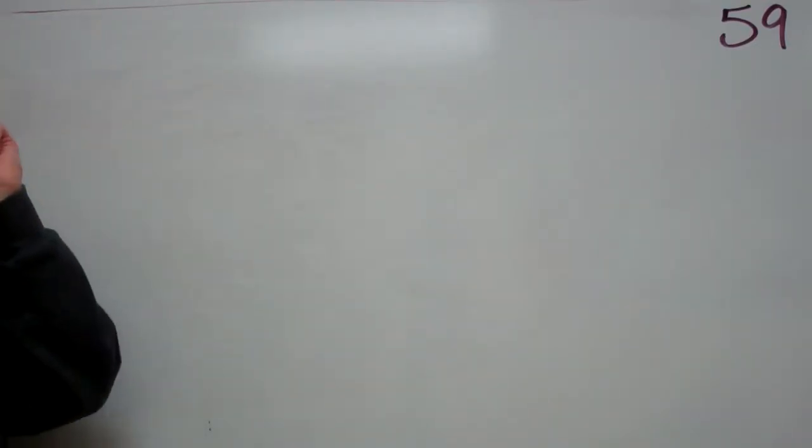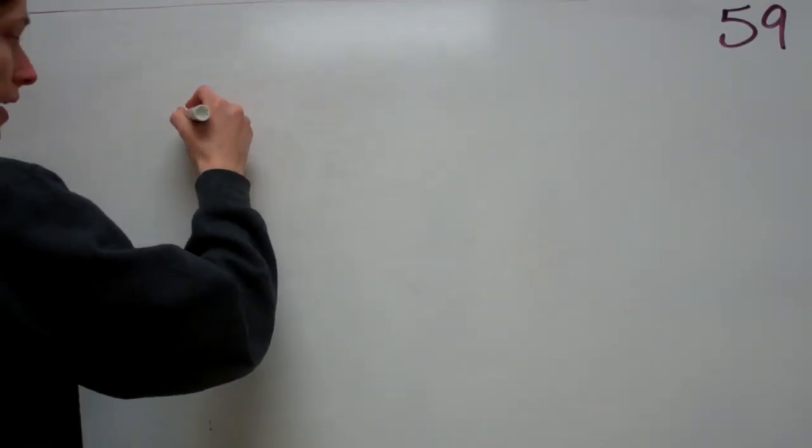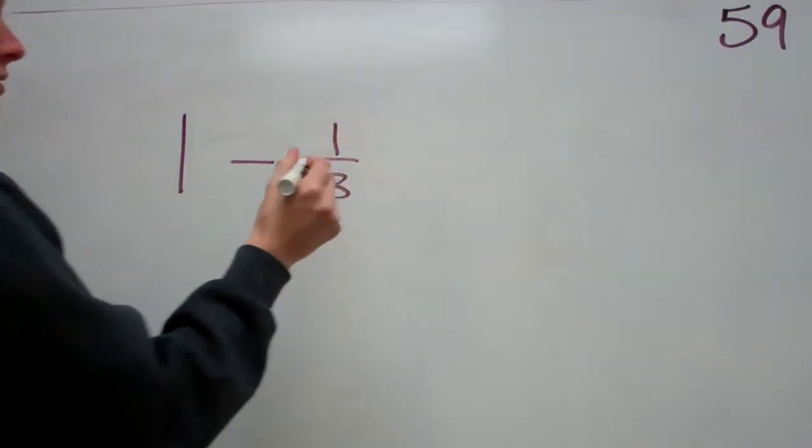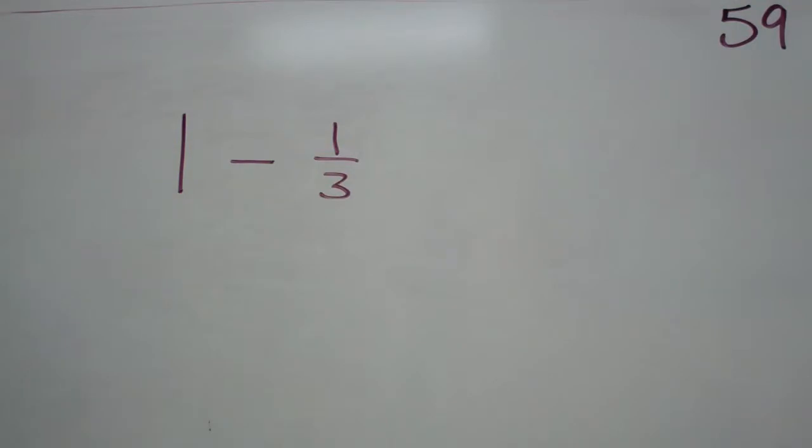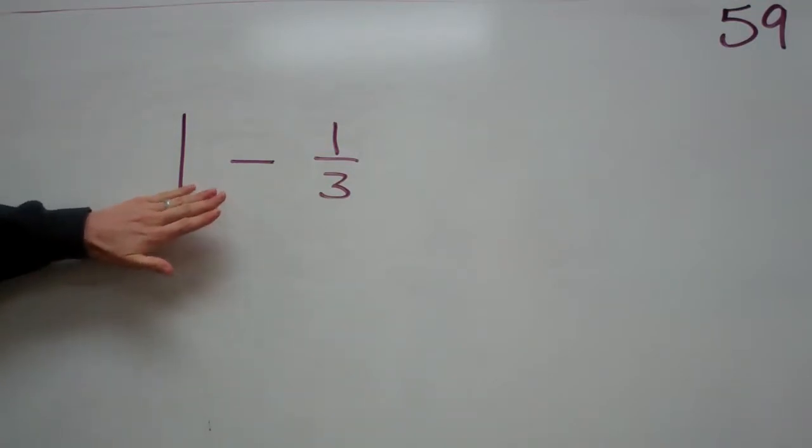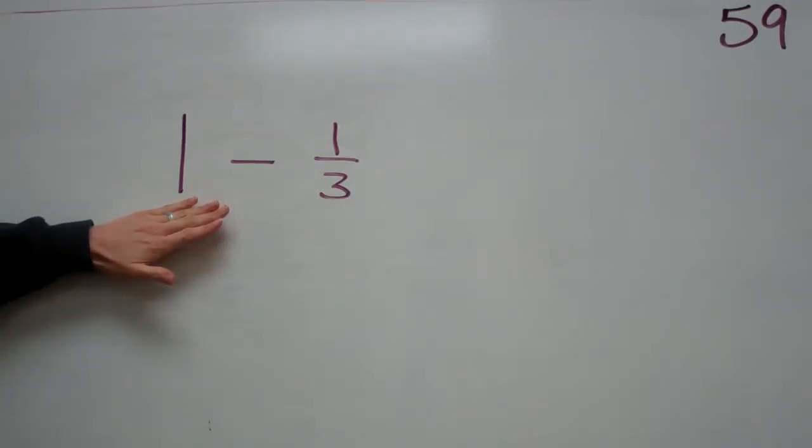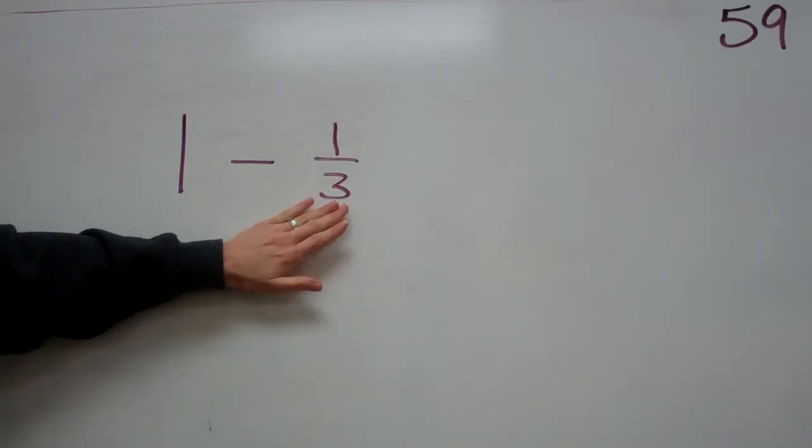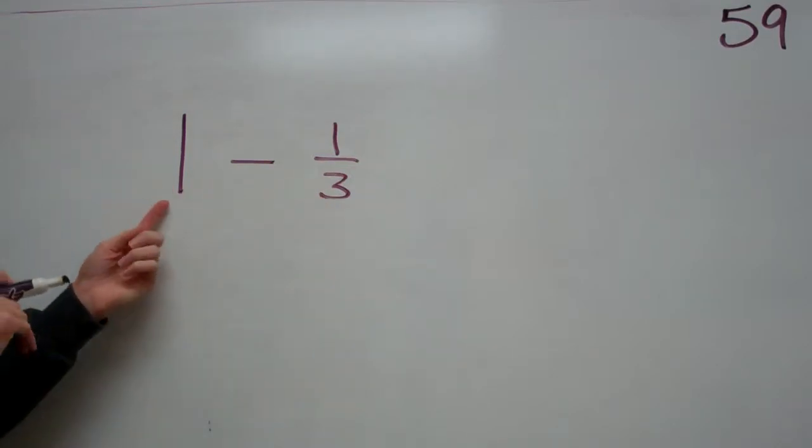This one might be a tad bit harder. This one says one minus one third. Now remember, what is our one whole equal? How do you do that? What do we see that the pies are broken up into based on this one? Thirds. Yes. Three out of three.